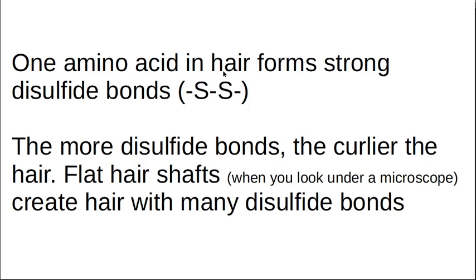So the amino acid in the hair makes these disulfide bonds. The more disulfide bonds you have, the curlier your hair and your flat hair shafts, remember that other picture under the microscope, has got hair with lots of disulfide bonds. So to straighten really curly hair, you have to get rid of those disulfide bonds.